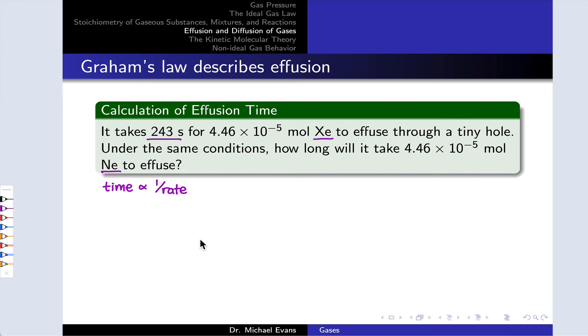So time is proportional to one over the rate. This means that the time to effuse is proportional to the square root of the molar mass. One over the one over the square root of molar mass, if you like.